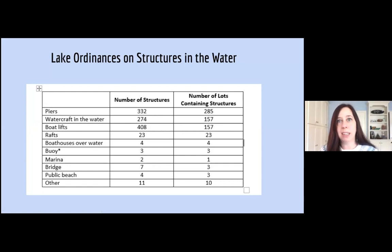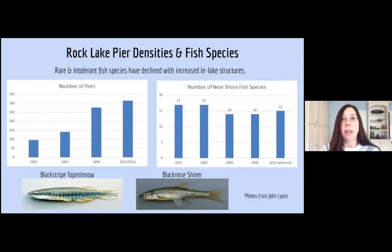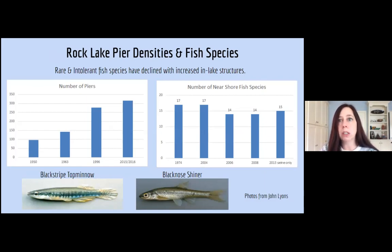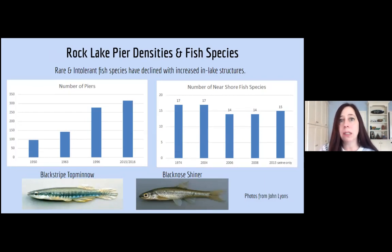This table shows the Rock Lake data collected on structures in the water. Some of this information was of interest to the local municipality when reviewing their ordinances related to structures on the lake. There's also long-term data on Rock Lake on both the number of piers and near-shore fish communities. Data indicates that as more structures have been added, rare and intolerant near-shore fish species have declined — notably the black-striped top minnow and black-nose shiner have not been documented in near-shore fish surveys since 1974. These small fish are important canaries in the coal mine, alerting us that lake habitat has been negatively impacted.